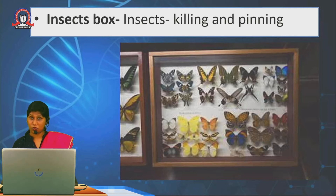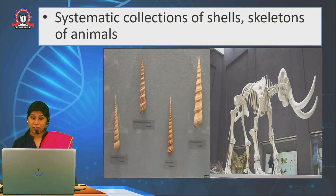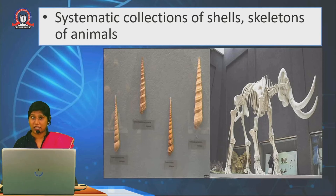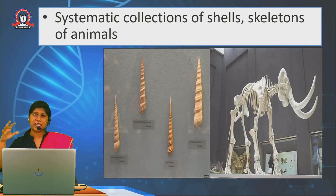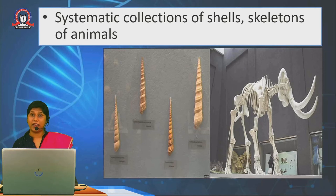In museums, we can also see shells and skeletons. There are systematic collections of shells and skeletons of different animals in the museum. Shells you already know. Skeletons are the bones of animals. For example, dinosaurs existed once but are now extinct — they are vanished from the earth. How do we know what they looked like? From their bones. Their skeletons are systematically arranged and displayed in museums, giving us the idea that dinosaurs once existed.